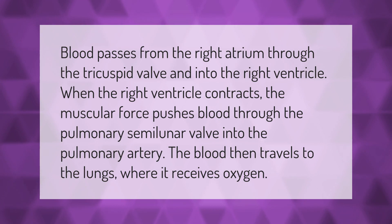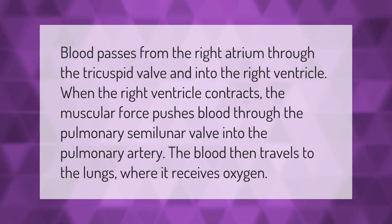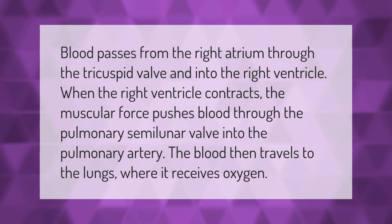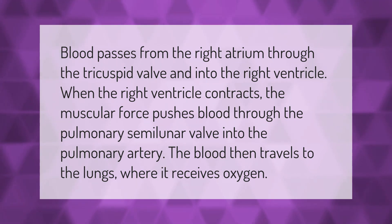Blood passes from the right atrium through the tricuspid valve and into the right ventricle. When the right ventricle contracts, the muscular force pushes blood through the pulmonary semilunar valve into the pulmonary artery. The blood then travels to the lungs where it receives oxygen.